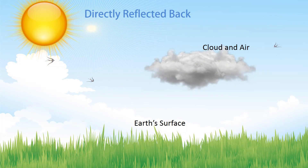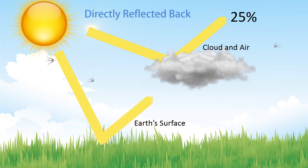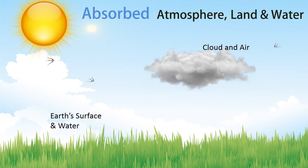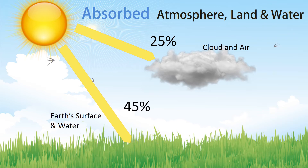About 25% of the energy received from the sun is reflected back by clouds and particles in the air. The earth's surface reflects back about 5%. The clouds and atmosphere absorb about 25% of the energy from the sun, and the earth's surface and water absorb about 45%.